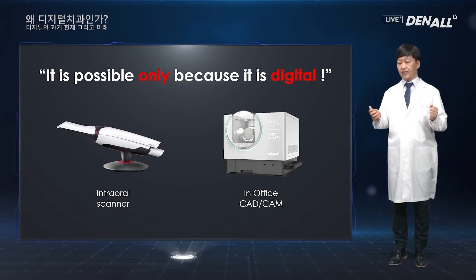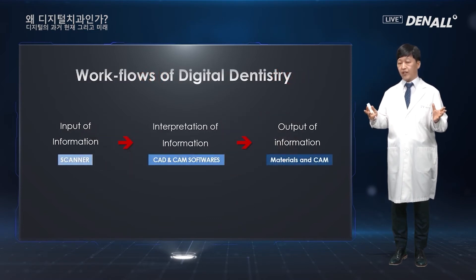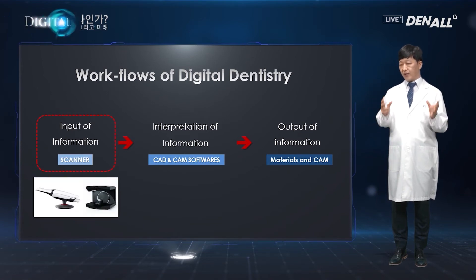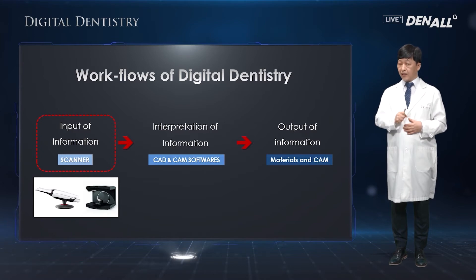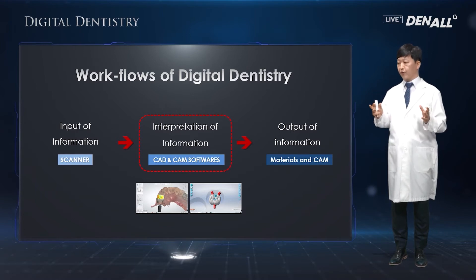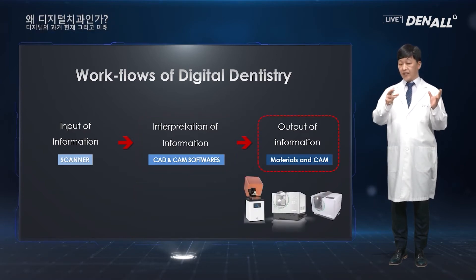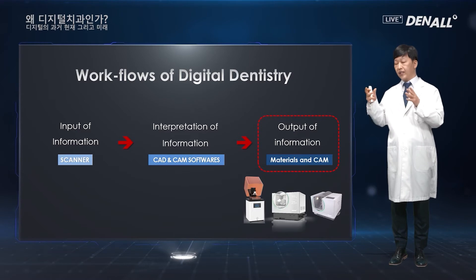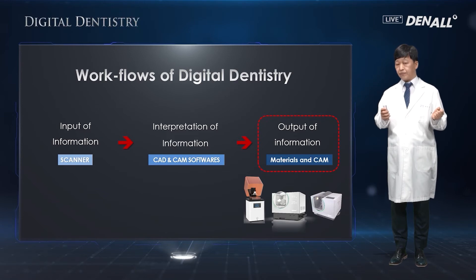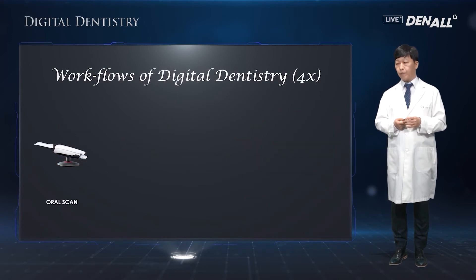What is the digital dentistry workflow? First, information needs to be input — you input information using oral scanners. Second, CAD/CAM software is used to design the crown; this is interpretation of data. Finally, you determine how to print out the designed crown. You can use a 3D printer, a 4-axis milling machine, or a 5-axis milling machine.